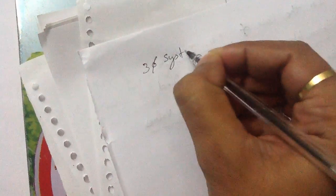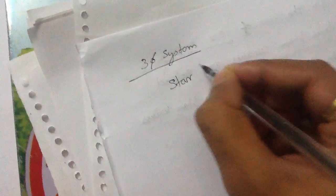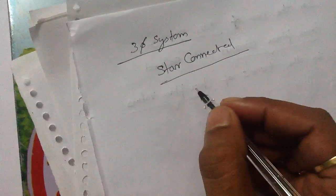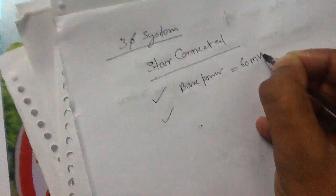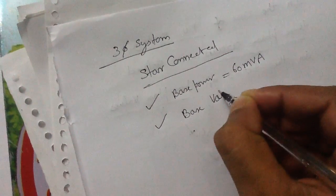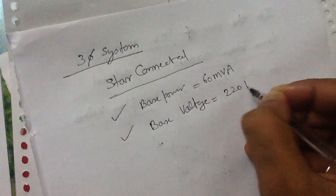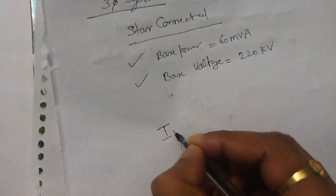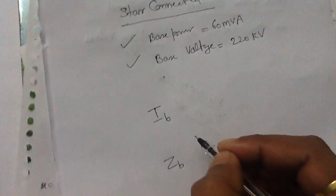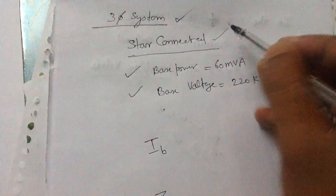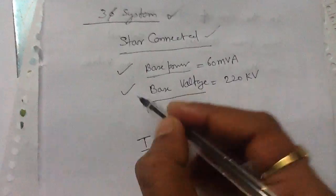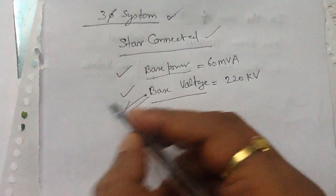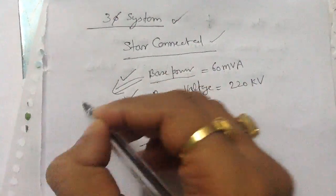Suppose this is a three-phase system and it is a star-connected system. The base power of the system is given as 60 MVA, and the base voltage of the three-phase system is given as 220 kilovolt. We are asked to find the base current and the base impedance. You must understand that the base voltage of a three-phase system is always the line-to-line voltage, and this base power is the three-phase power.